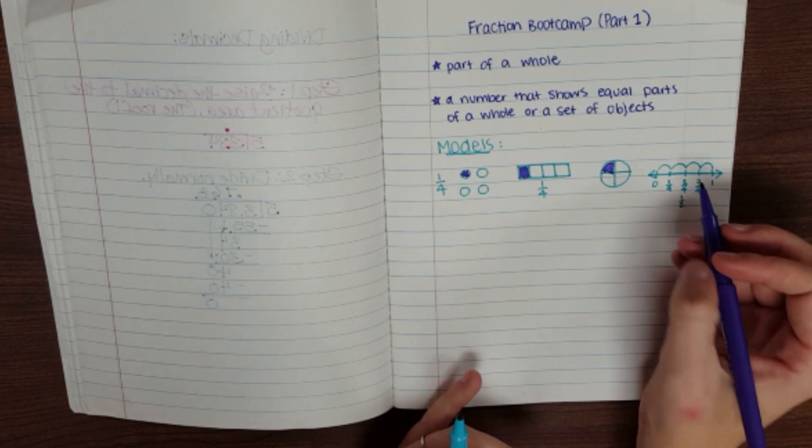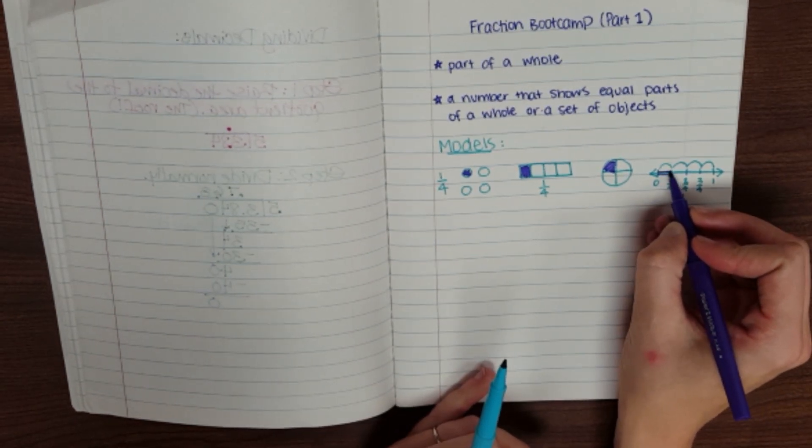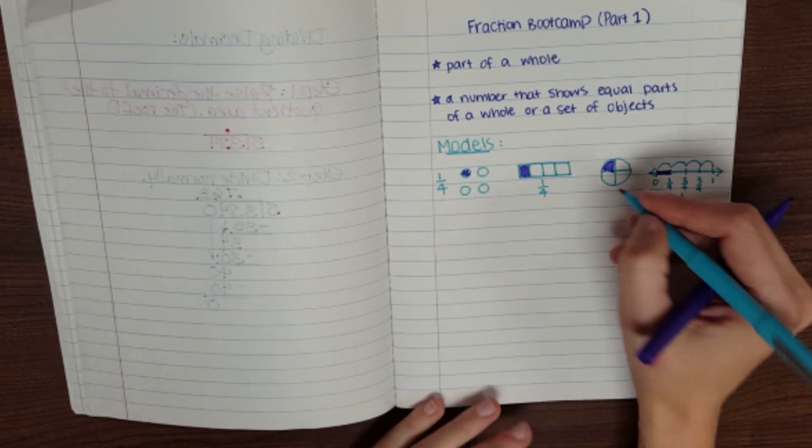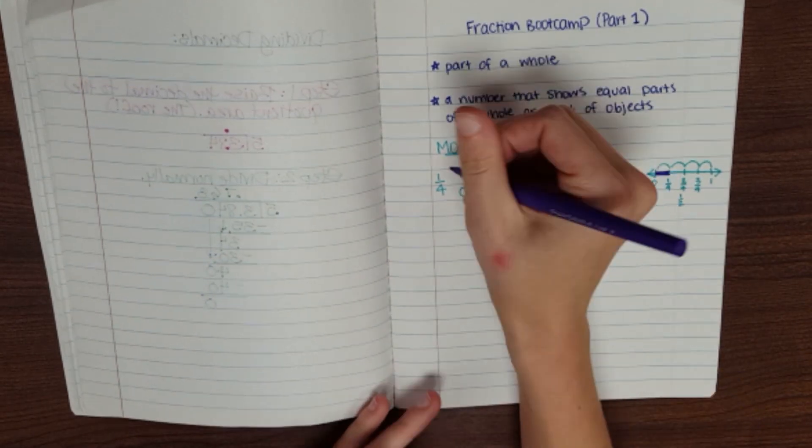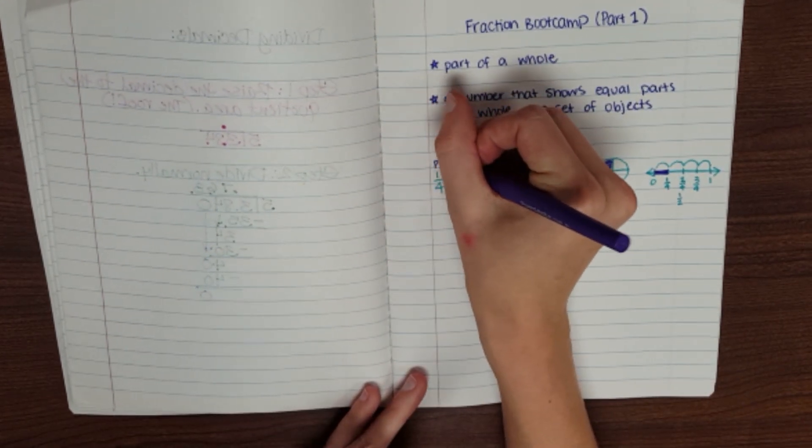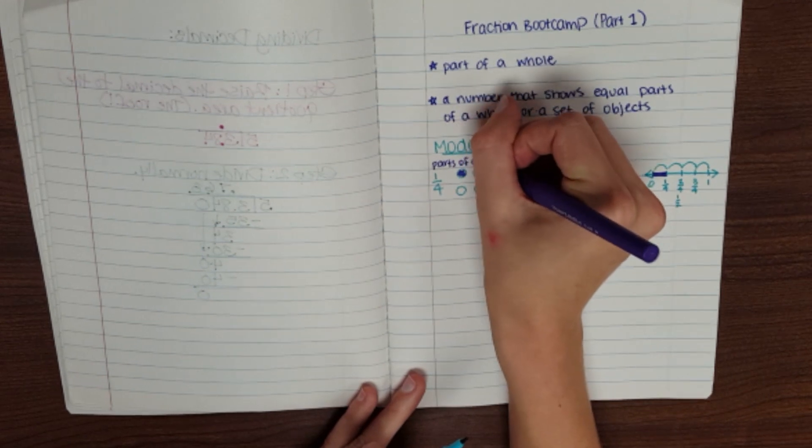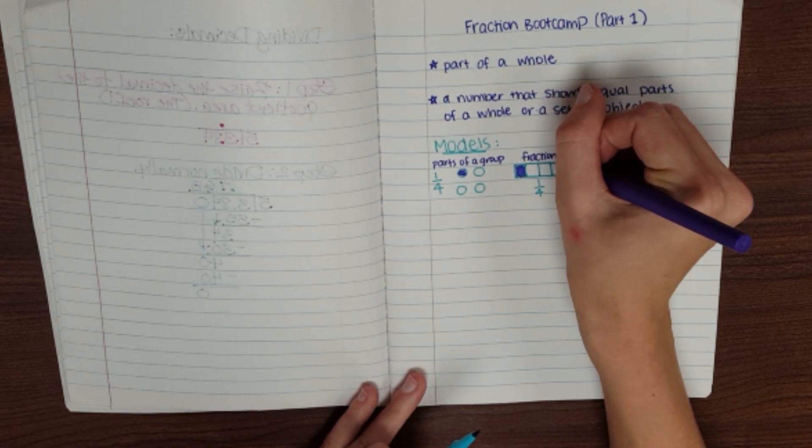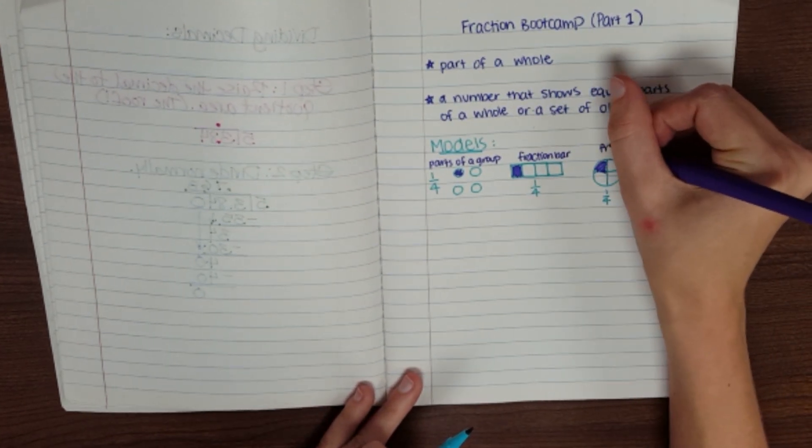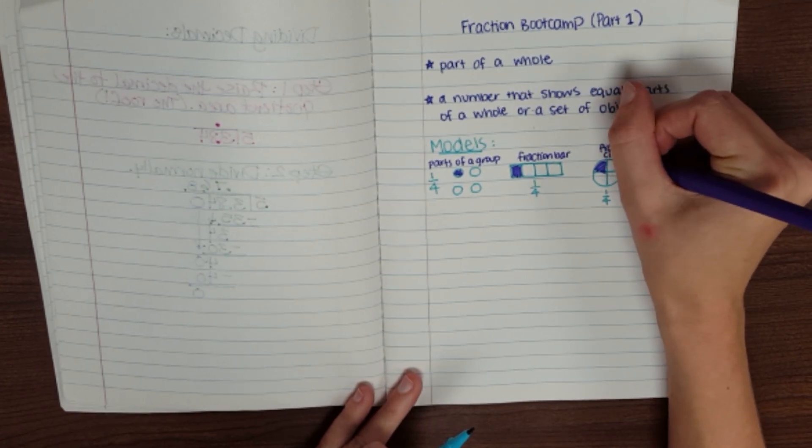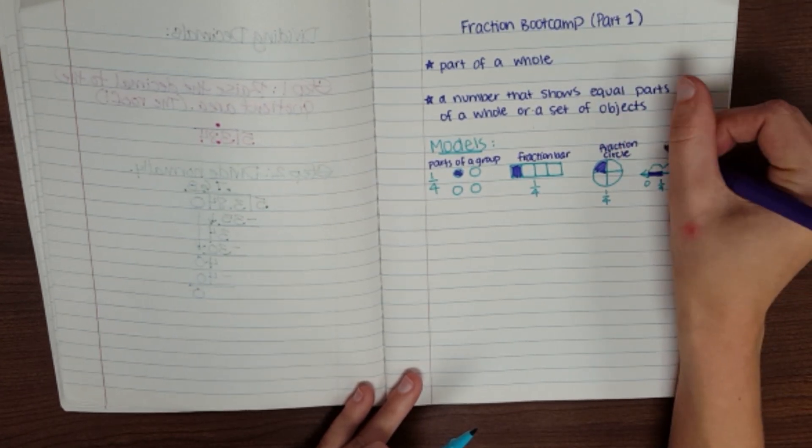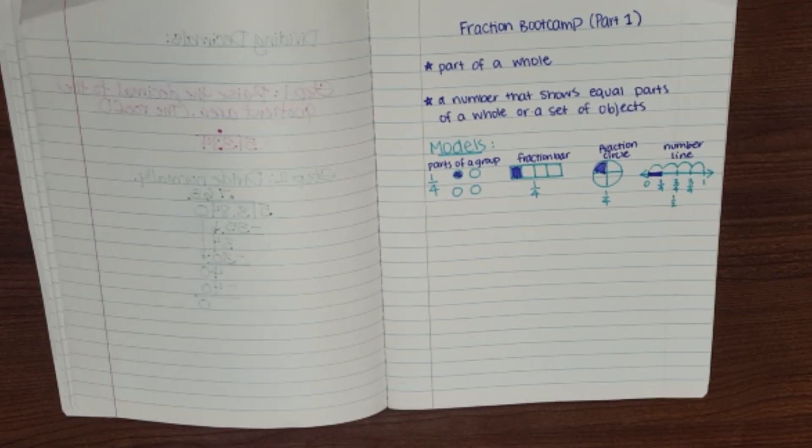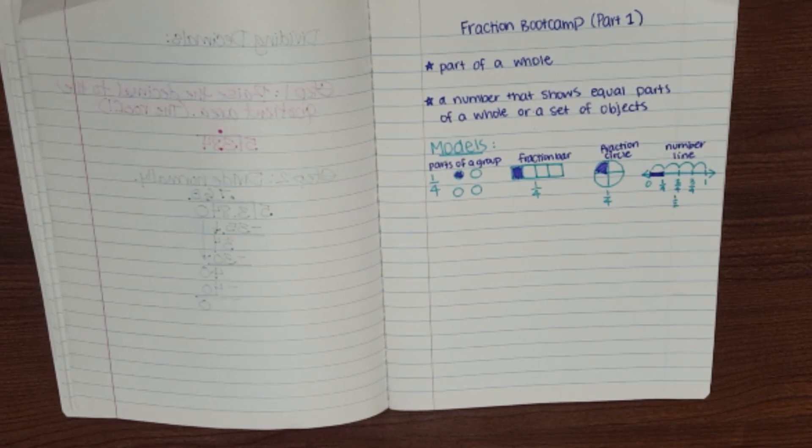On a number line, we can also show one-fourth by shading from zero all the way up to one-fourth. That would be one-fourth of this number line. All of these are different ways to represent one-fourth. It would be parts of a group, or a fraction bar, a fraction circle, or a number line. Again, these are things you should have seen coming up from third and fourth grade, but we think a good review is a good thing to do.